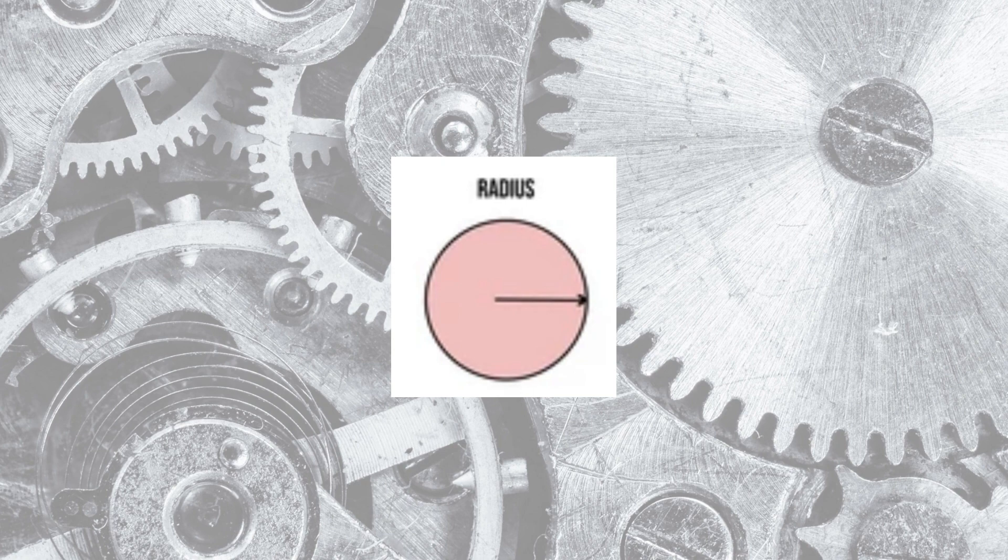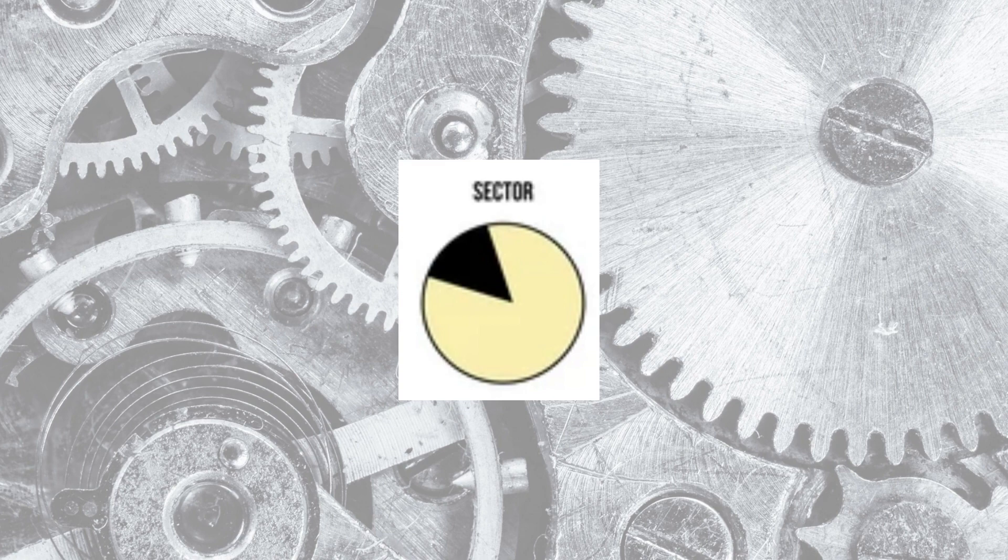Okay first, radius is a straight line from the centre of the circle to any point on the circumference. Sector is the region enclosed by two radii and an arc. We got minor sector and major sector.